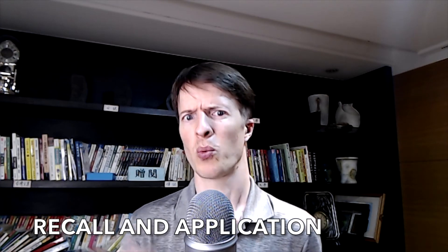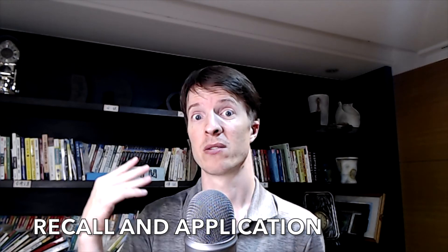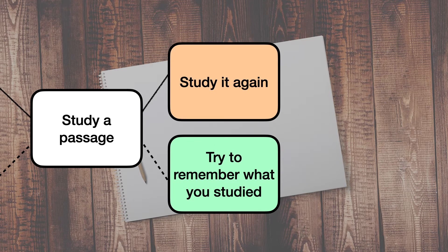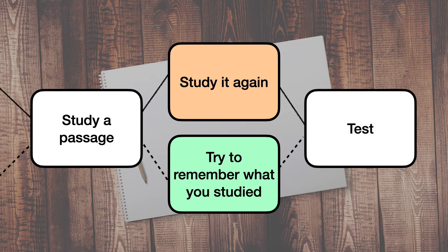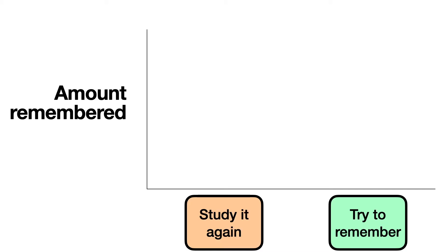One of the most effective ways of remembering information is trying to remember that information. In a study on free recall, researchers asked two groups of students to remember the same material. One group re-studied or re-read the material. The other group pulled out a blank sheet of paper and tried to remember everything they could about what they had read. Later, everyone got the same test. The students who used the blank sheet of paper — working hard to remember — performed a lot better. The act of pulling something out of your head turns out to be a really effective way of remembering it.